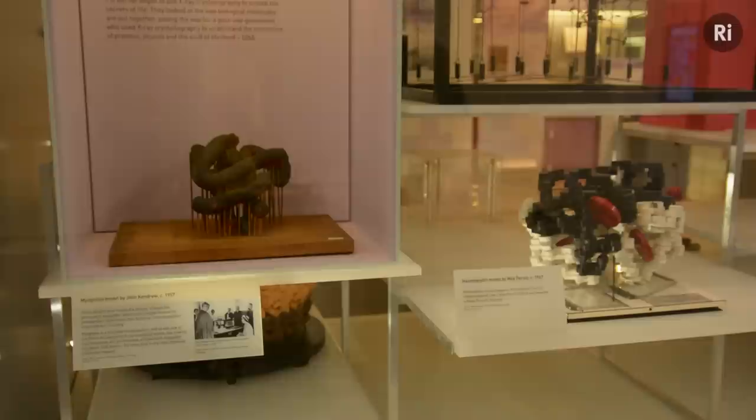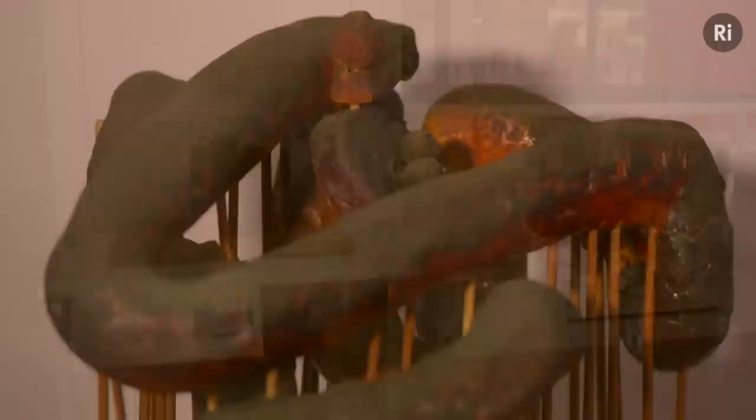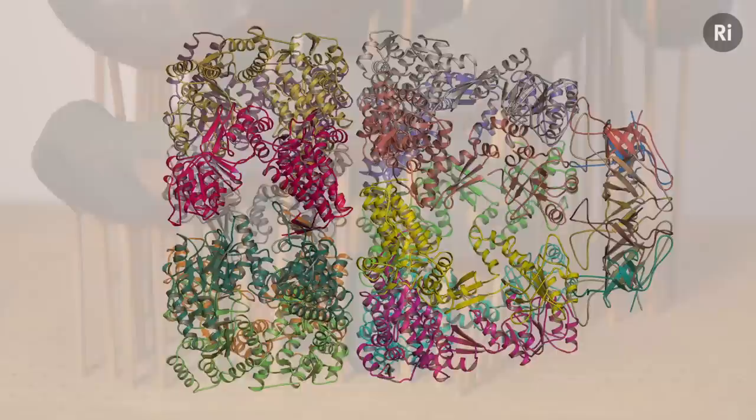From that humble, rather hideous start in 1958, it's amazing how far we've travelled. Over 90,000 structures of protein, DNA and RNA molecules have now been determined by X-ray crystallography, giving us detailed insights into how life operates at the molecular level.